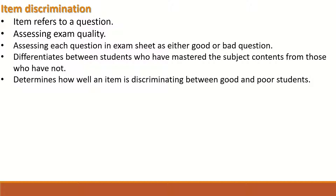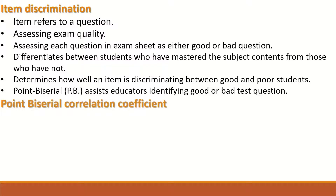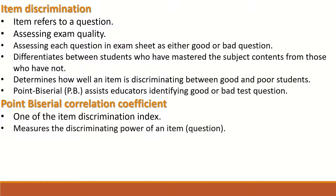Item discrimination determines how well an item discriminates between good and poor students. The point biserial correlation coefficient assists educators in identifying good or bad test questions. It is one of the item discrimination indices, and it measures the discriminating power of an item or question.